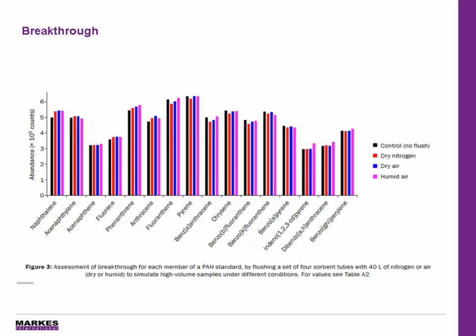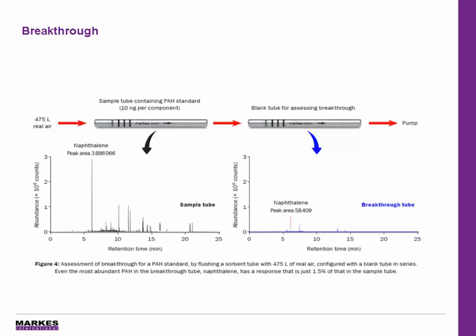With such high sample volumes, it's important to consider breakthrough — where the analyte volume is increased to the point that compounds could elute off the far end of the tube. Four tubes were spiked with 10 nanograms per component of PAH standard, and a blank tube was placed in series after each spiked tube. Three conditions were tested, with very similar responses across all four tubes. The breakthrough schematic shows the first tube with 475 litres of real air sampled onto it and a blank tube behind — no compounds of interest were detected on the second tube.